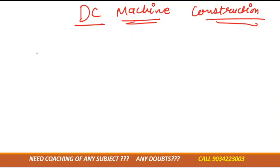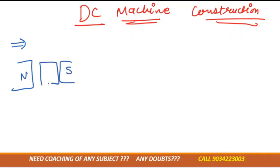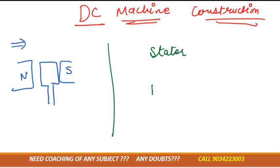As you have seen previously, for any machine we need two things. One is the magnet — that is north and south magnet — and another is the coil. So only these two things are important, and we'll use these two things in our DC machine construction but in a different form. For any machine we have two things: one is stator and another one is the rotor.